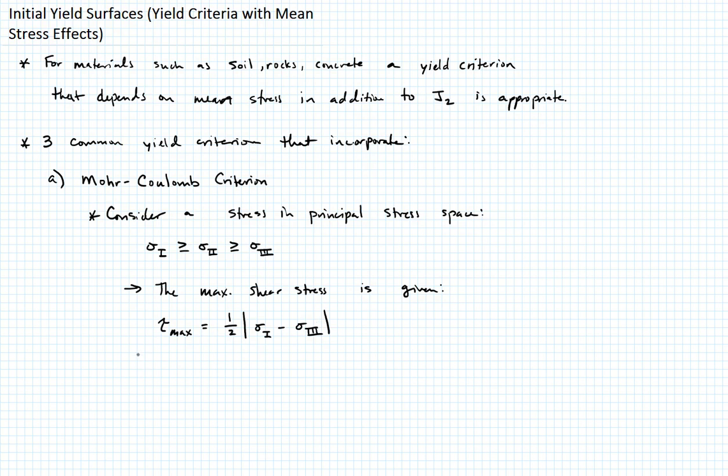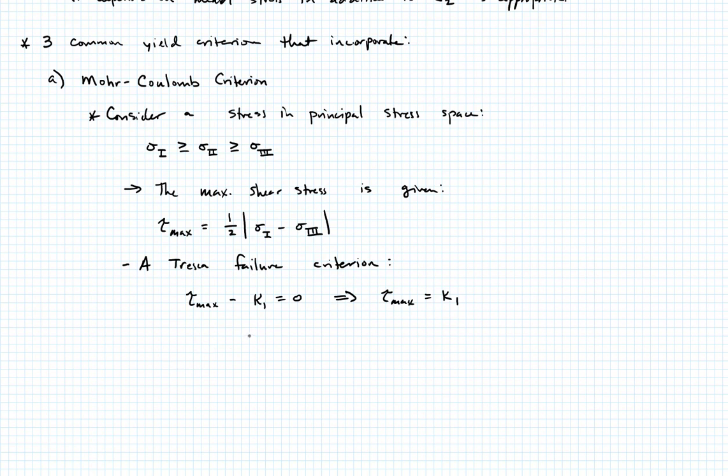If we thought about a Tresca criterion, we could write it really similar to this. A Tresca failure criterion, remember that Tresca is a max shear stress, would be tau max minus some K1 critical value equals zero, or we would say equivalently that tau max equals K1. So what is the normal stress that's acting on the plane in which this maximum shear stress exists? Let's draw a Mohr circle so we can see what this looks like.